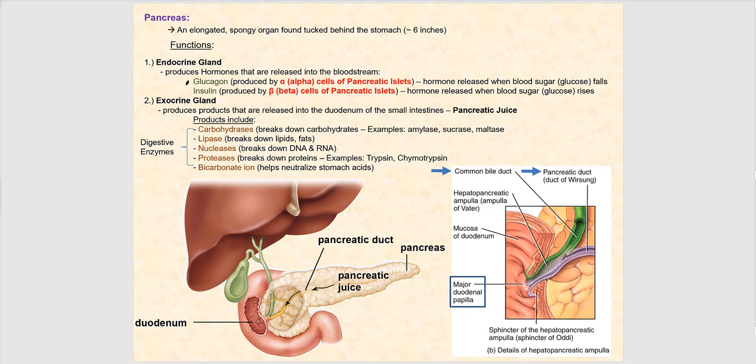Glucagon is produced when our blood glucose — blood sugar levels — falls. When blood sugar declines, glucagon is secreted into blood. The next hormone is insulin, produced by the beta cells of pancreatic islets, released in response when blood glucose rises. We'll cover glucagon and insulin more when we get to the endocrine system.